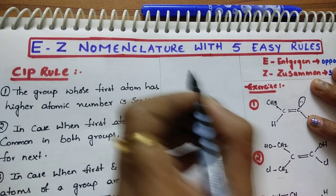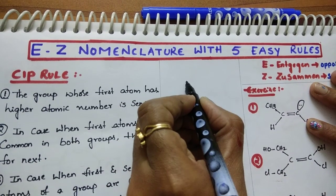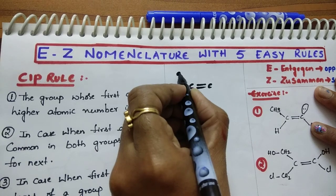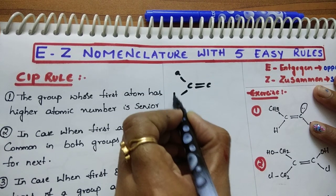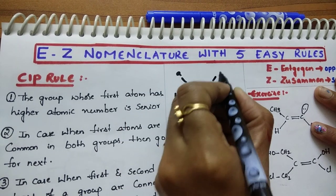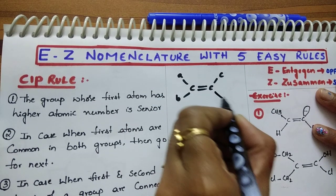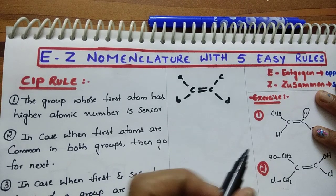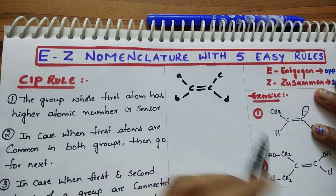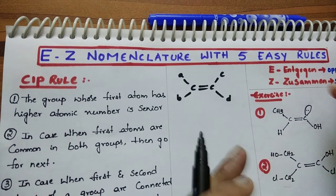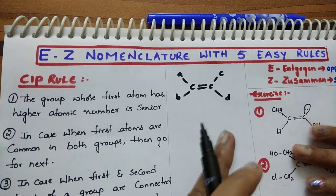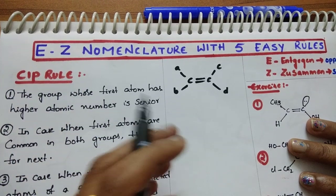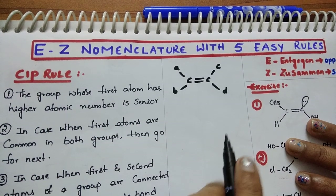If an alkene is having 4 different groups — A, B, C, D — then we cannot name it under the cis and trans category. A special nomenclature is required in this case. We call it E/Z nomenclature.